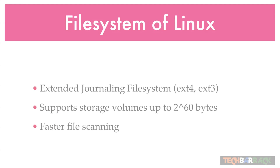Linux makes use of the extended journaling file system — that is ext4. ext4 is currently being used and it supports storage volumes up to 2^60 bytes, which is very large — GBs and GBs of storage. The extended journaling file system ext4 also has faster file scanning. Overall, the extended journaling file system is really good.